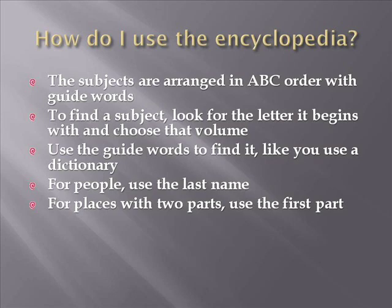To use an encyclopedia, subjects are arranged in alphabetical order with guide words. To find a subject, look for the letter it begins with and choose that volume. Use the guide words to find it, like you use a dictionary. For people, use the last name. For places with two parts, use the first part — the first letter of that word.